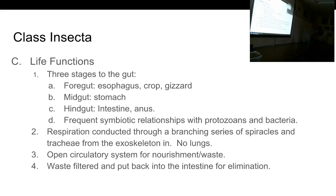For the bug, the intestine is mostly there to dry things out and absorb water — it doesn't absorb very many nutrients. They very frequently have symbiotic relationships with protozoans and bacteria living in their stomach, especially things that eat wood like termites and carpenter ants, because they don't have the machinery to break down the wood themselves. They rely on bacteria and protozoans to break it down for them.